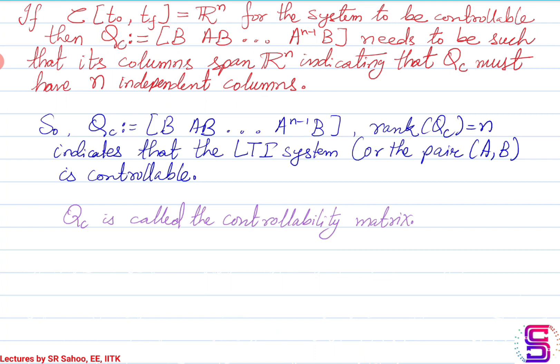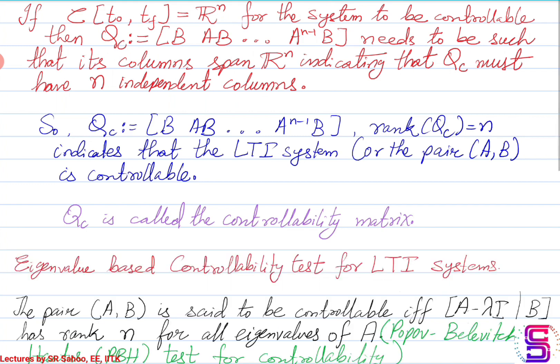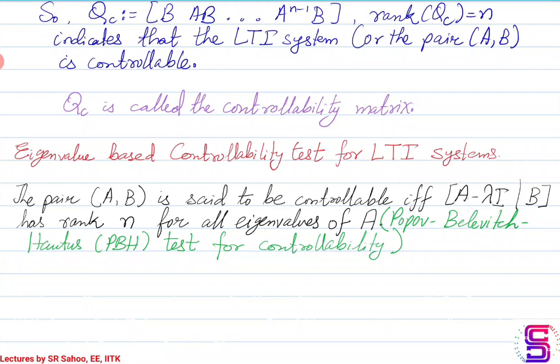One way to check controllability for LTI systems is to form a matrix from the A and B matrices: the first entry is B, the second is AB, the third is A²B, and we continue until A^{n-1}B. This matrix is called the controllability matrix. We take the rank of this controllability matrix. If the rank is n, then we say the LTI system — or equivalently the pair (A, B) — is controllable.